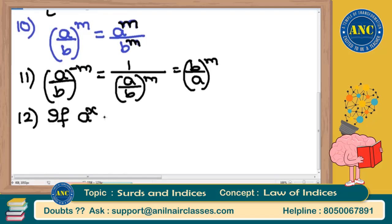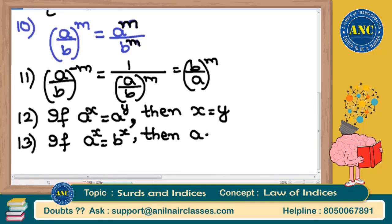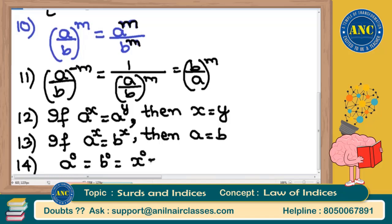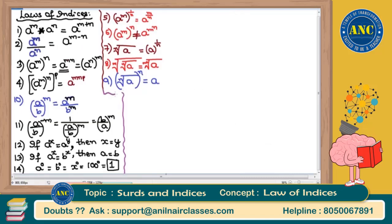If a^x = a^y and the bases are the same, ignore the base and equate the powers: x = y. The reverse is also true — if bases are different but powers are the same, ignore the power and equate the bases. Finally, any base raised to the power zero equals 1: a^0 = b^0 = 100^0 = 1. All give the same beautiful answer: one.